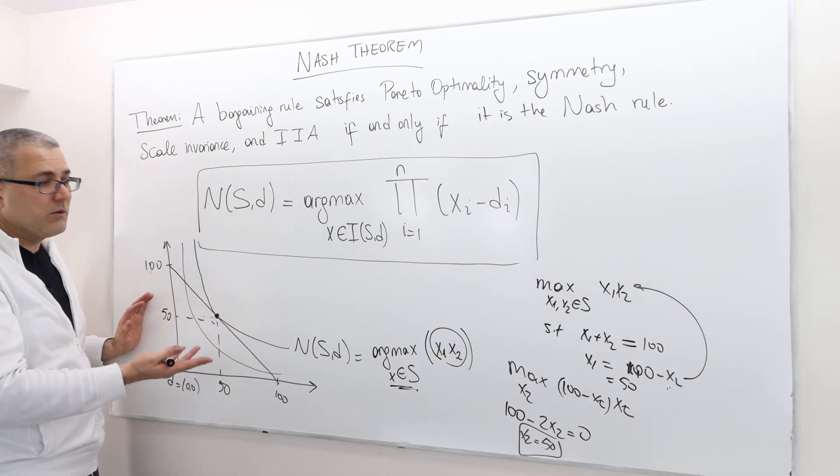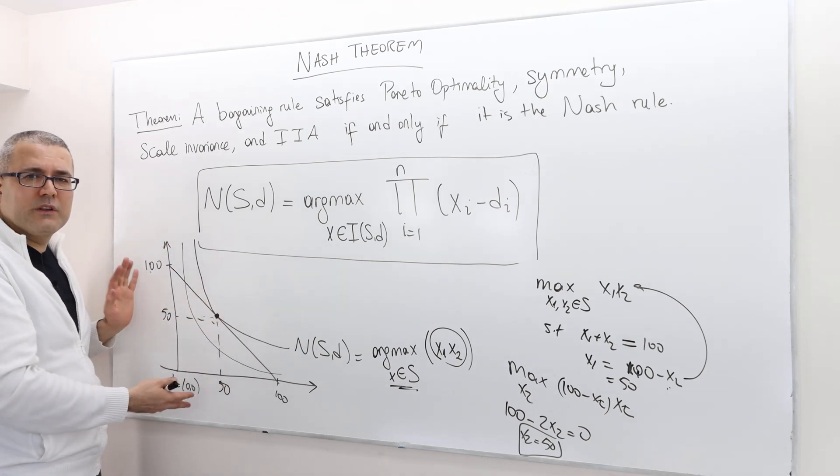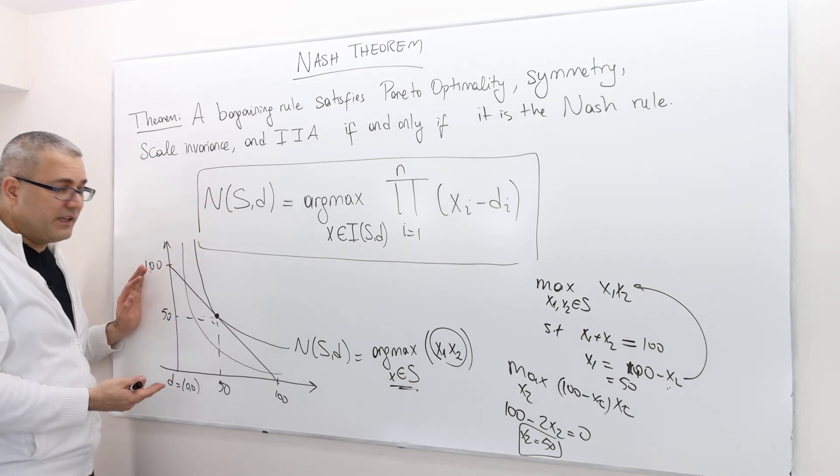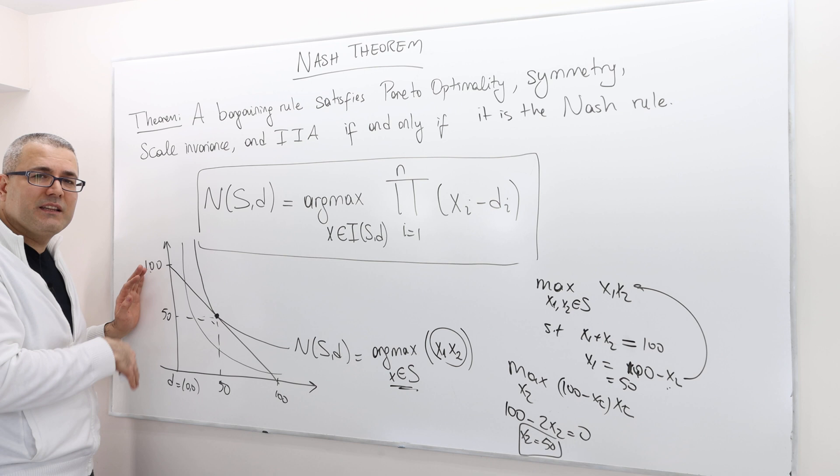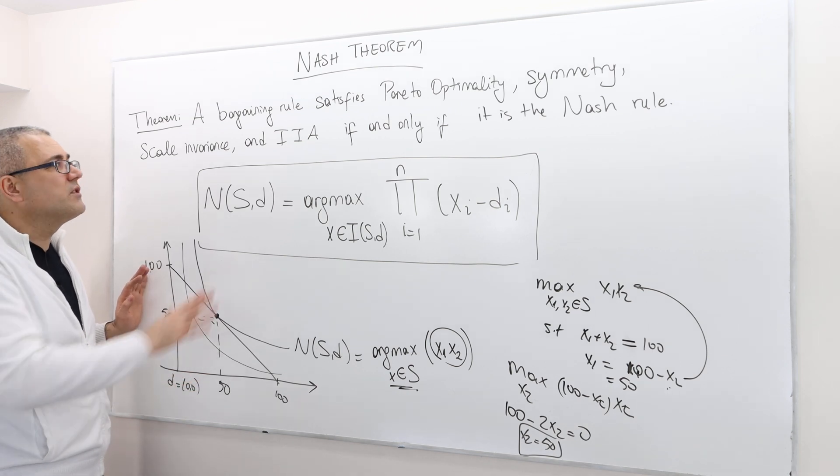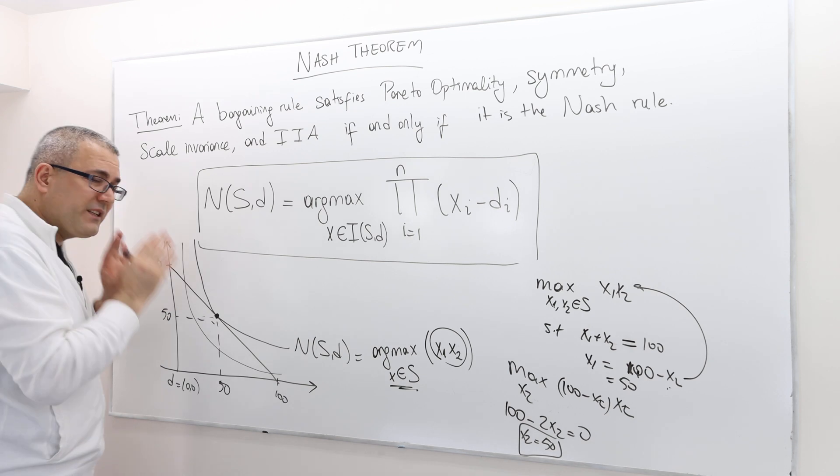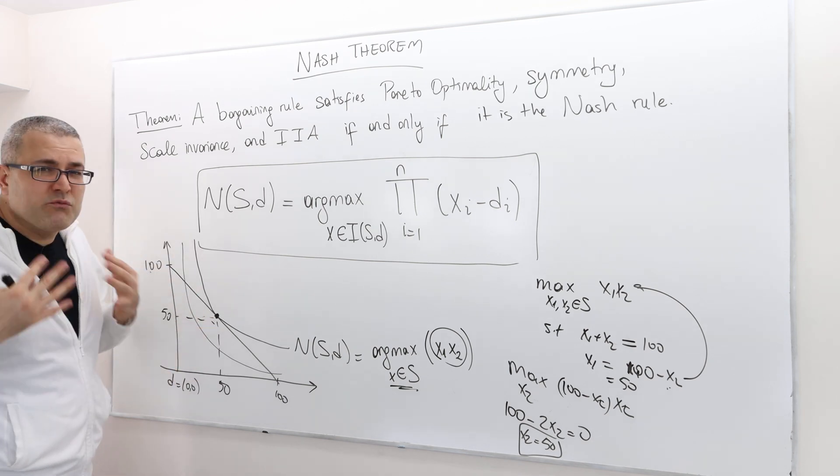Is it scale invariance? Well, I have to scale this up or down. And then IIA. Does it really satisfy IIA? Well, I have to consider some set S, some set T, etc. So these two properties, it's harder to prove for this specific game.